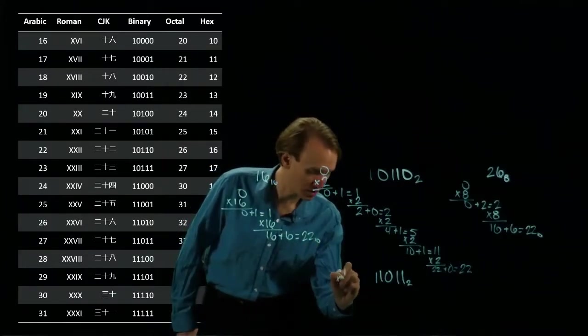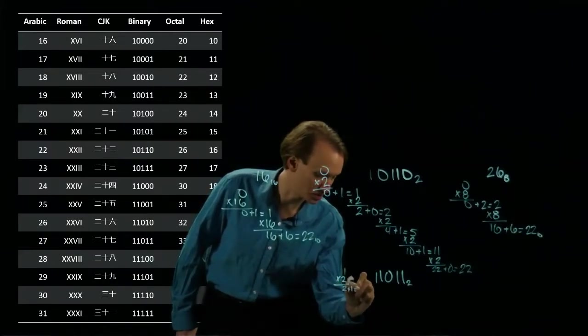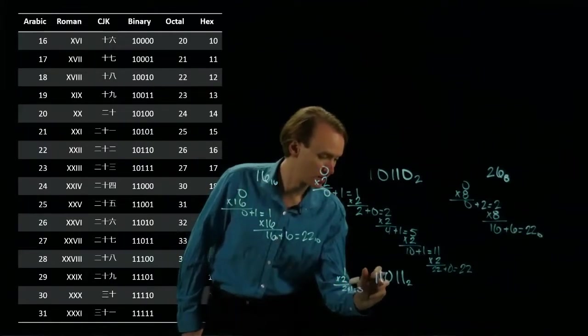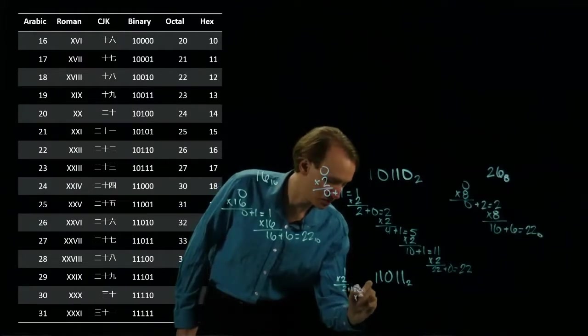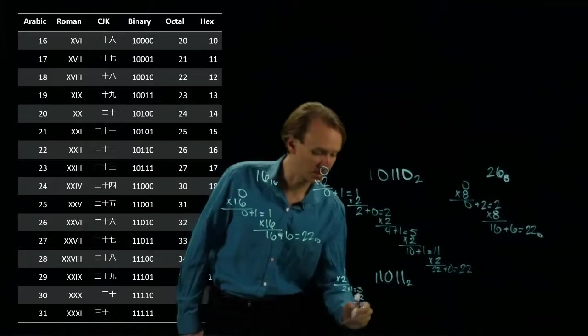So I'll have 1 times 2 gives me 2 plus 1 is 3 times 2 is 6. My third bit is a 0.